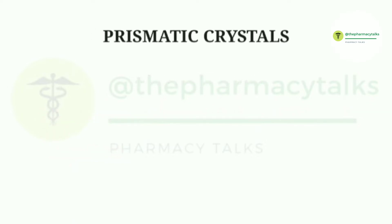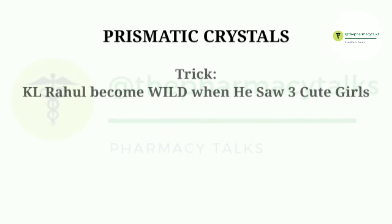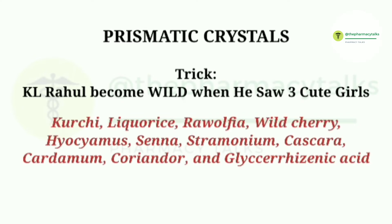Let's move on and talk about prismatic crystals. The trick to remember the secondary metabolites of this type is: 'K.L. Rahul become wild when he saw three cute girls.' It includes kerchi, licorice, Rauwolfia, wild cherry, hyoscyamus, senna, stramonium, cascara, cardamom, coriander, and glycyrrhizic acid.